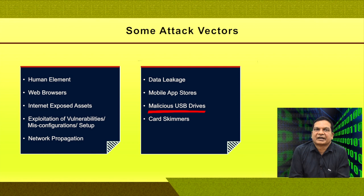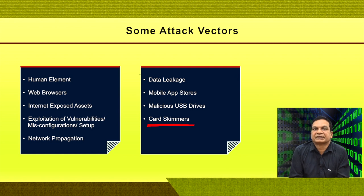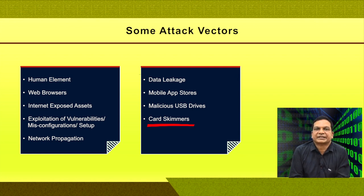Malicious USB drives and card skimmers are also attack vectors. Card skimmers are used to capture financial data — for example, when a credit or debit card is used for online banking or shopping, the card skimmer collects sensitive information. These are attack vectors through which hackers initiate intrusion into organizational networks, and once inside, can access systems, applications, and data to damage digital resources.